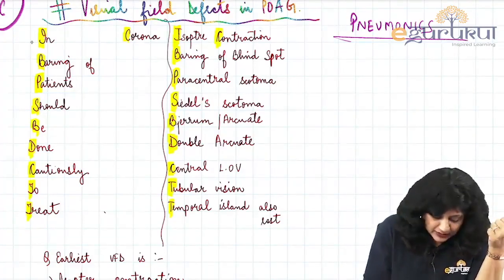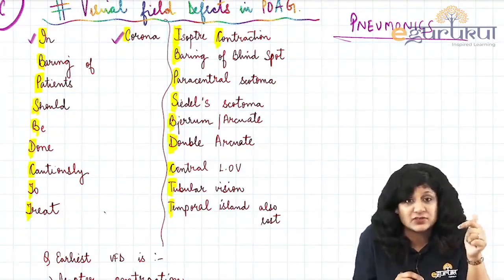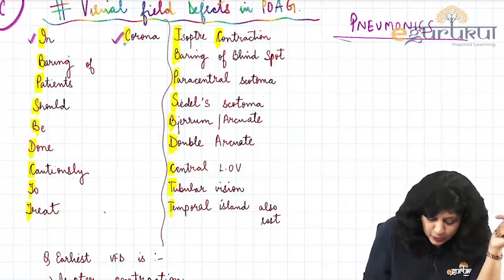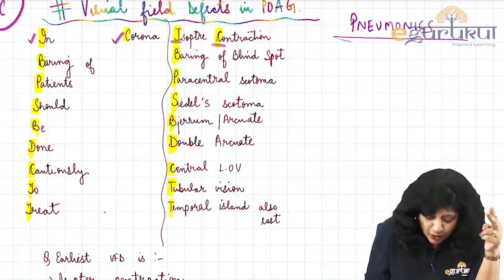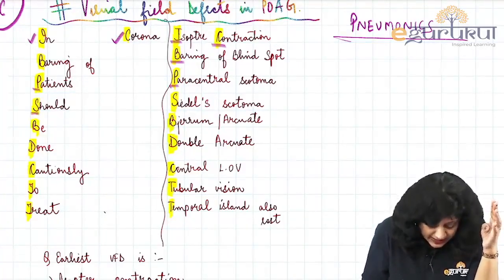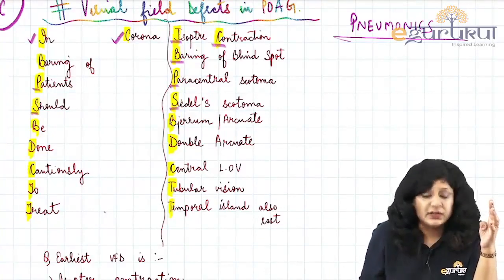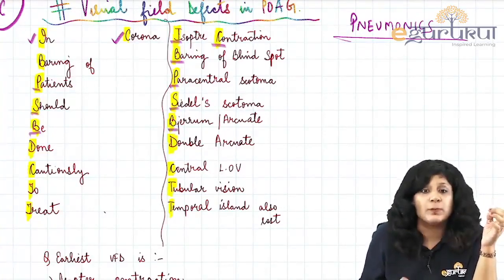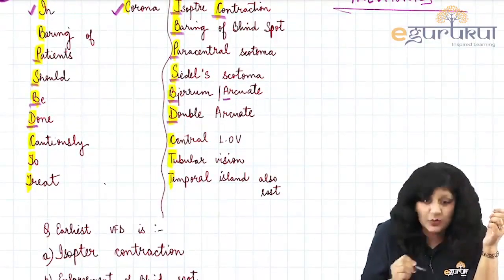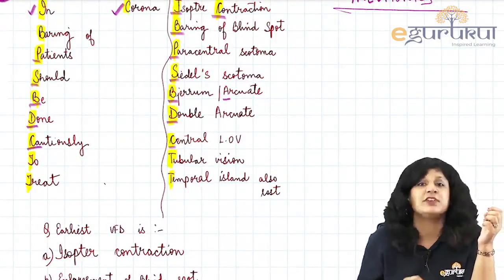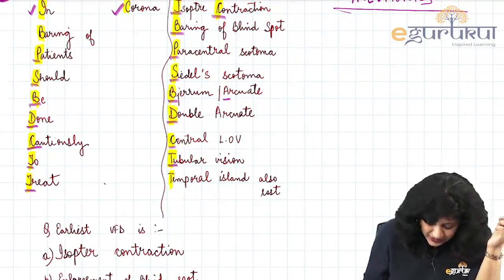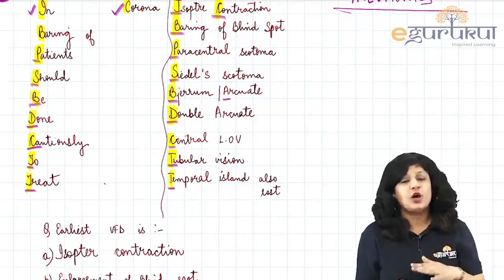In 'corona': C is isopter contraction, O is bearing of blind spot, R is paracentral scotoma, O is sidal scotoma, N is gerum scotoma (same as arcuate scotoma), A is double arcuate scotoma. 'Cautiously' represents central loss of vision, '2' means tubular vision, and finally 'treat' — temporal island is also lost.